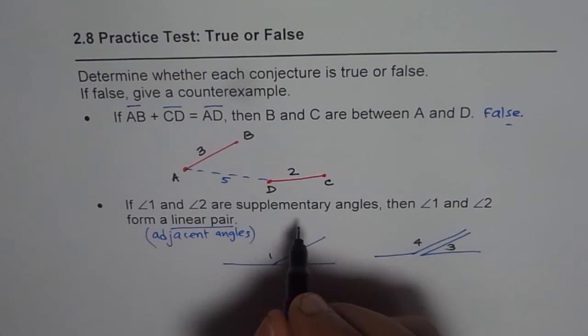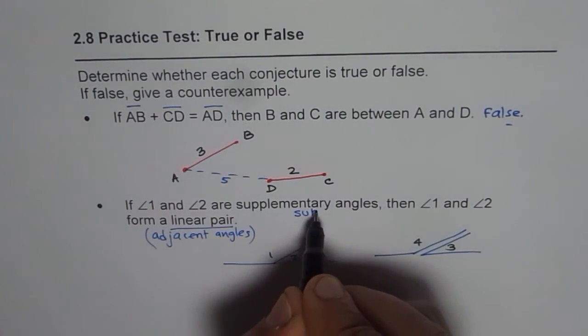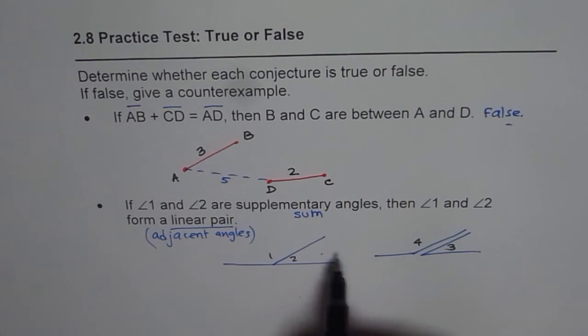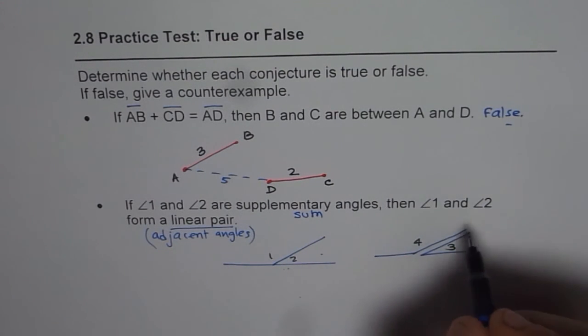As for the supplementary angles, we are only looking for sum. Whether they form a linear pair or not, right? So both one and two are supplementary angles. Three and four are supplementary angles. First one forms a linear pair but not the other one. So this is a counterexample and therefore we can say that the statement is false.